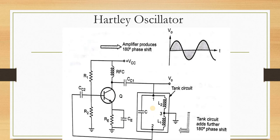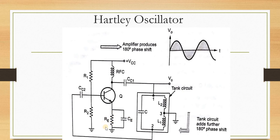The transistorized Hartley oscillator uses an NPN transistor. This particular circuit is a common-emitter configuration amplifier — the emitter terminal is grounded, making it common for input and output. These two are the coupling capacitors at the input and output side.